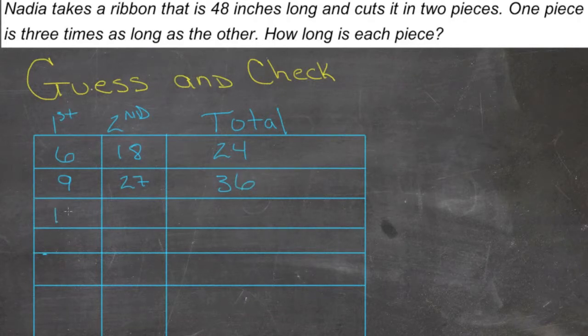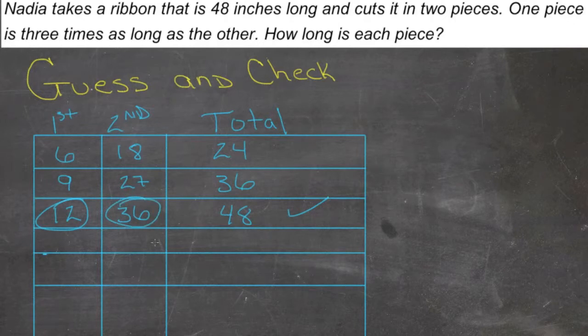If this one's 12, this one's three times 12, or 36. It's a total of 48. There we go. So our first piece is 12 inches. Our second piece is 36 inches. And we can verify that those two things add together to be 48, and 36 is indeed 3 times 12.